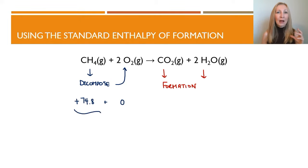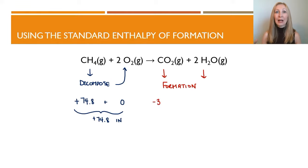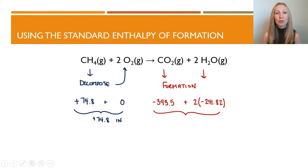Taking apart all of our reactants is going to cost us 74.8 kilojoules — we have to put in 74.8 kilojoules per mole. Then what we get out is based on the formation of the new molecules. Carbon dioxide releases 393.5 kilojoules when it forms, and water releases 241.82 kilojoules when it forms, and we have two moles of water.